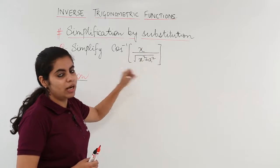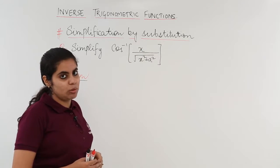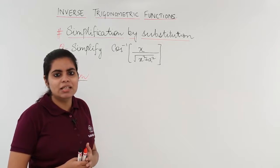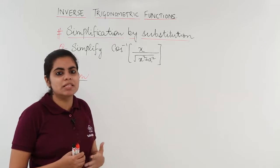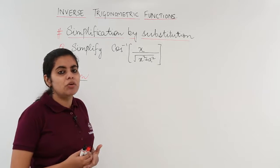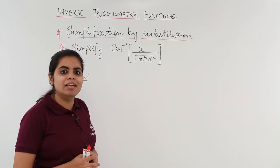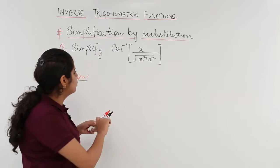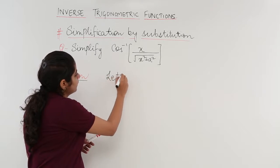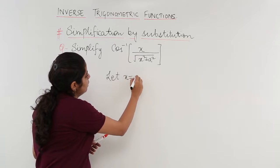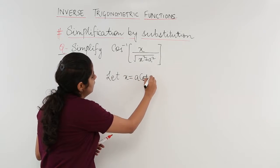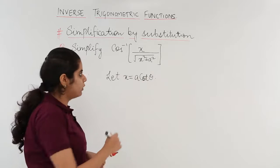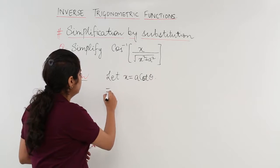Simplify: cos inverse of x divided by √(x² + a²). Remember, when we have a² + x², we substitute x by a·tan θ or a·cot θ. That is what we are going to do — let x = a·cot θ.